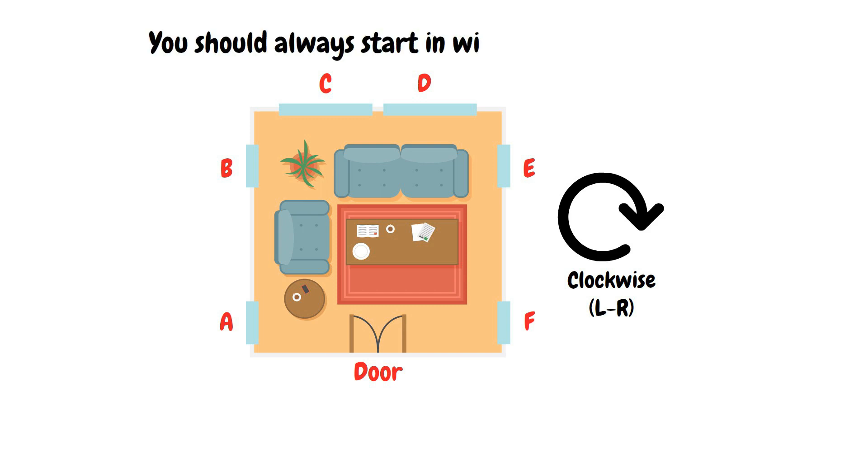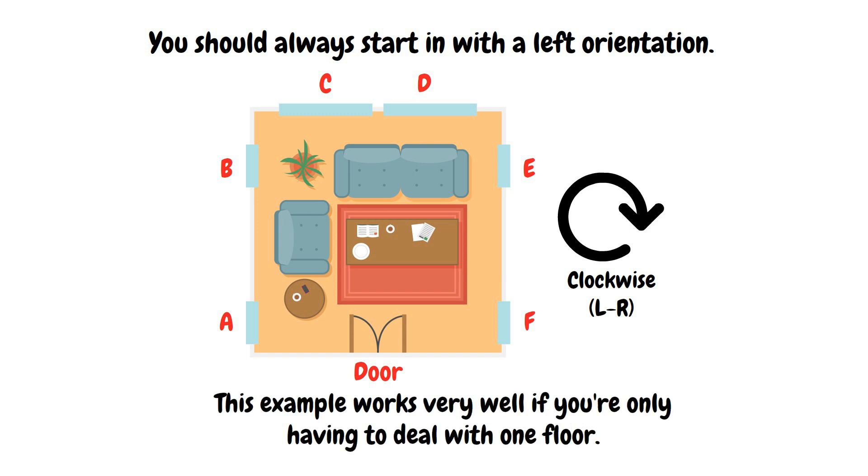You should always start with a left orientation. Usually, it's best to start or view the room from where you enter the room. So if you walked into a big room from a hallway or doorway, that's where you start from. Look to the left and then name all the way around. This example works very well if you're only having to deal with one floor.